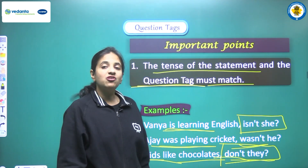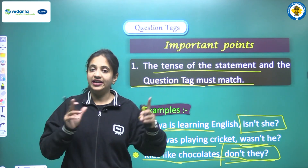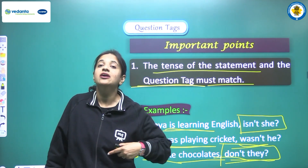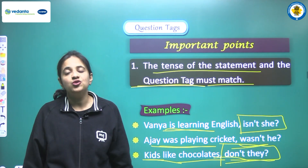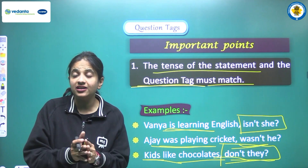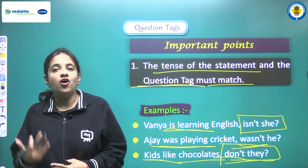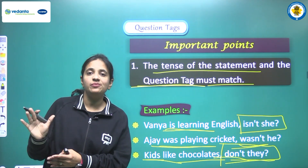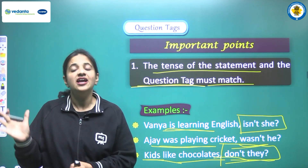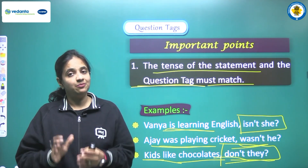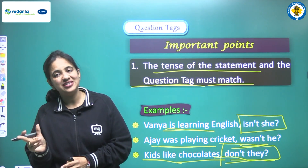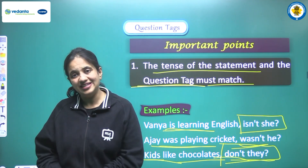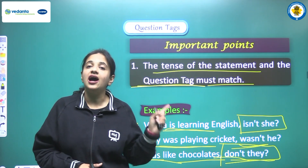According to rule one, we must be careful about tense. In present simple or past simple tense, helping verbs like 'do', 'does', or 'did' are hidden. If we have the second form of the main verb, 'did' is hidden — that's past simple. With a plural subject and first form of the main verb, 'do' is hidden. With a singular subject and the verb ending in 's', 'does' is hidden. We must use the same tense in the question tag.